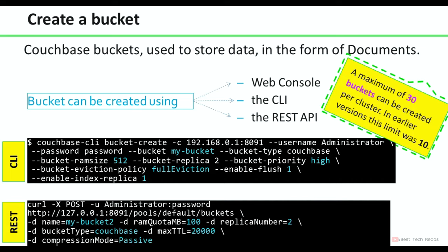So basically, what is a bucket? Couchbase buckets use it to store the data in the form of documents. A bucket can be created using these methods: we can create it from the Couchbase web UI or web console, we can use the CLI to create the bucket using the command line interface, or we can also use the REST API. A maximum of 30 buckets can be created per cluster.